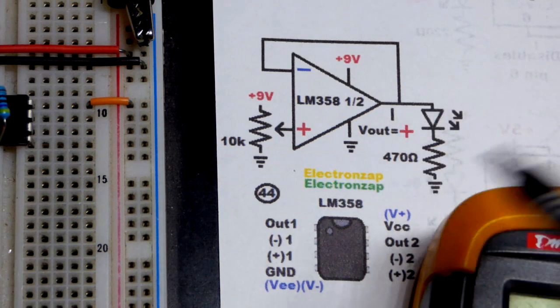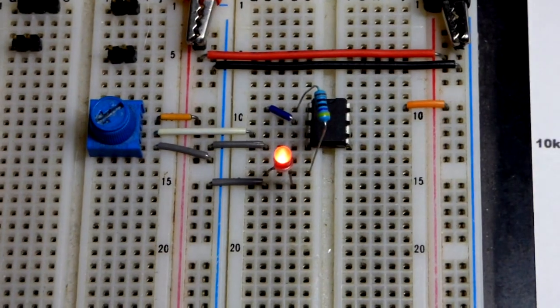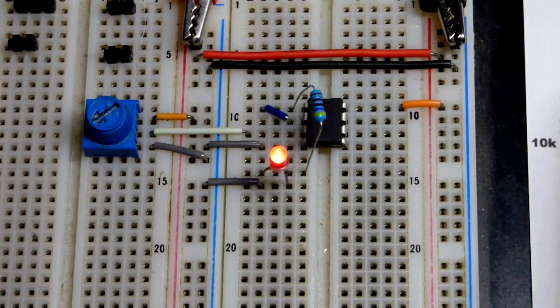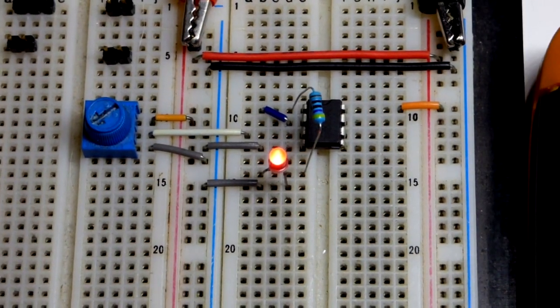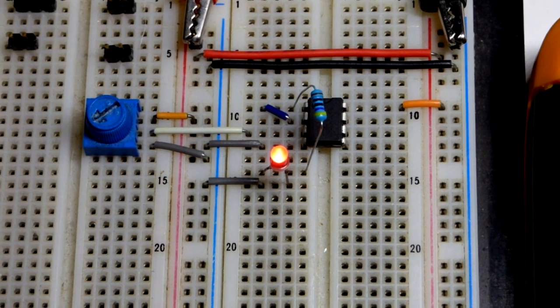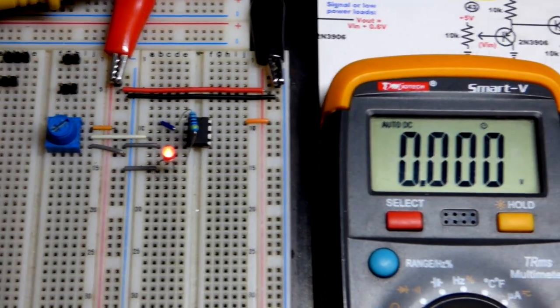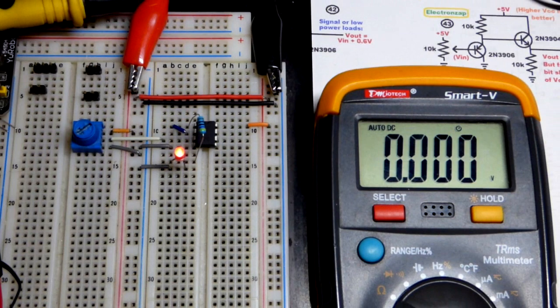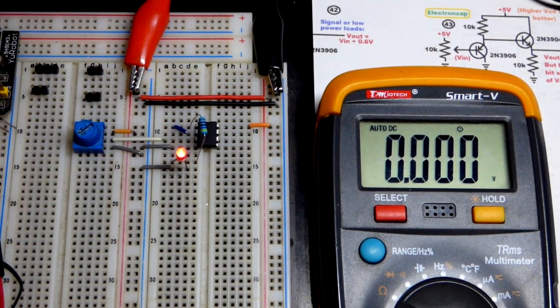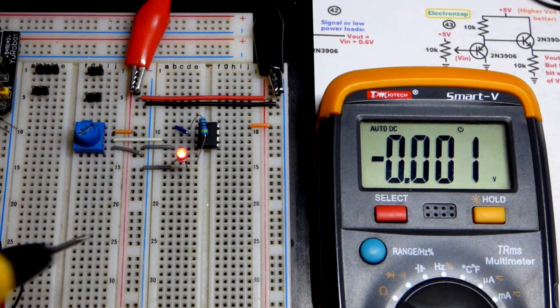And then we have an output load with the LED just for a visual effect. Of course, the output has, since it's an LM358, it falls a volt and a half short of the positive supply, but it can go down to ground. It can go down to zero volts. So we looked at that in earlier videos.